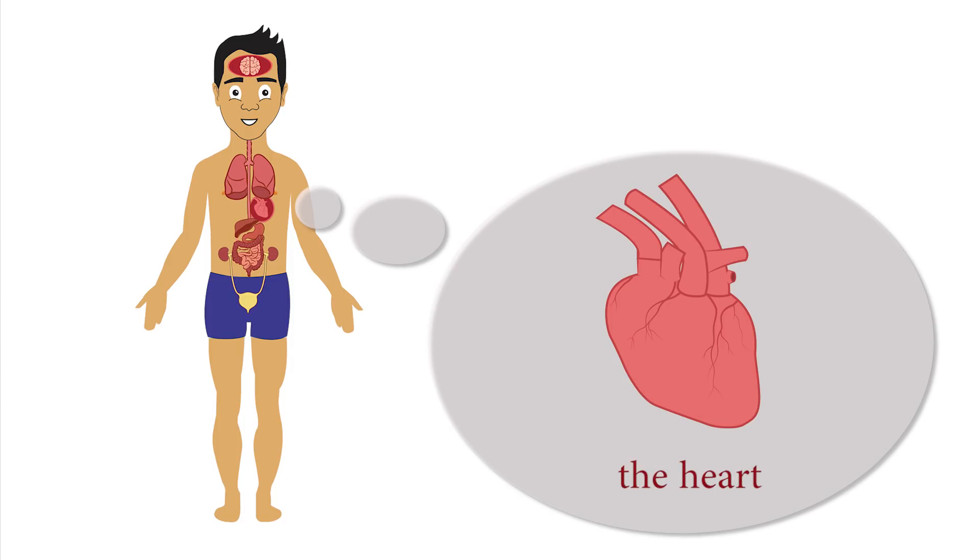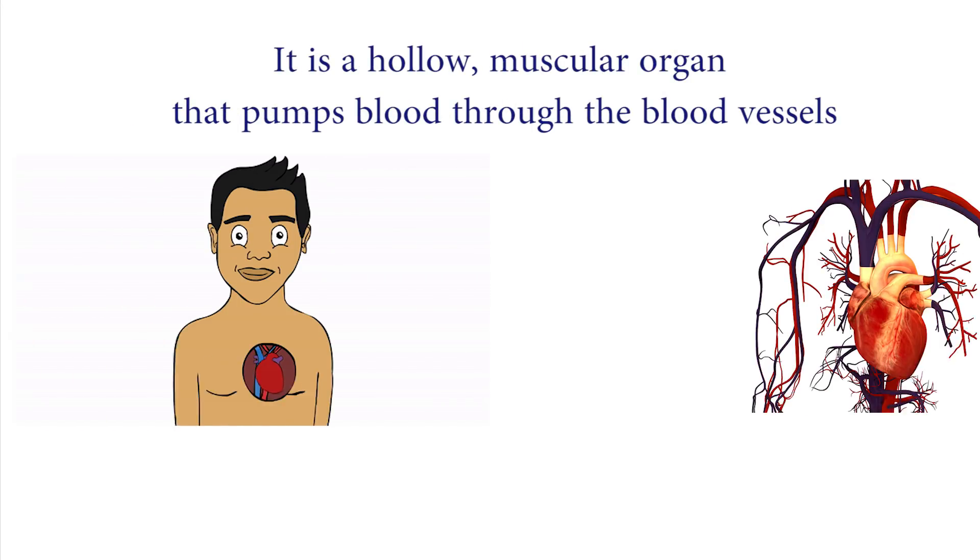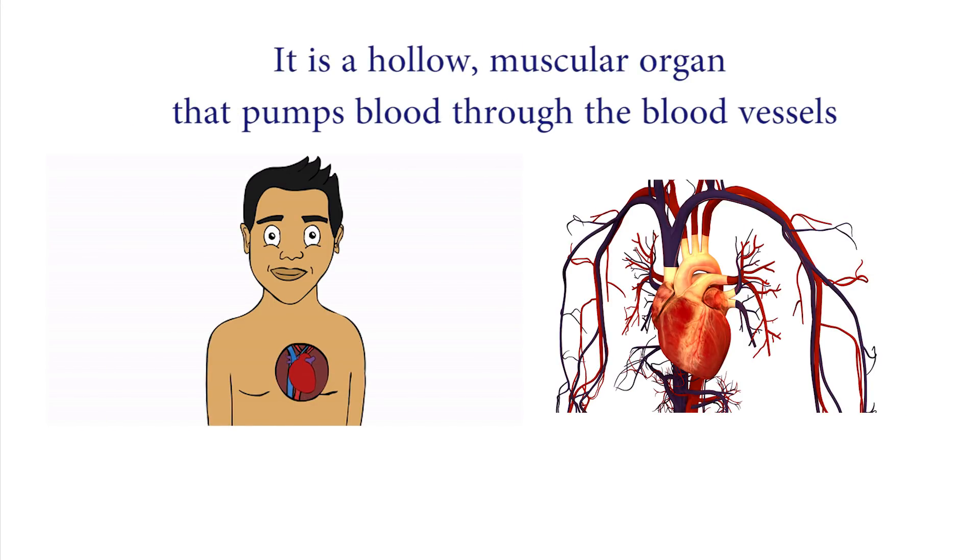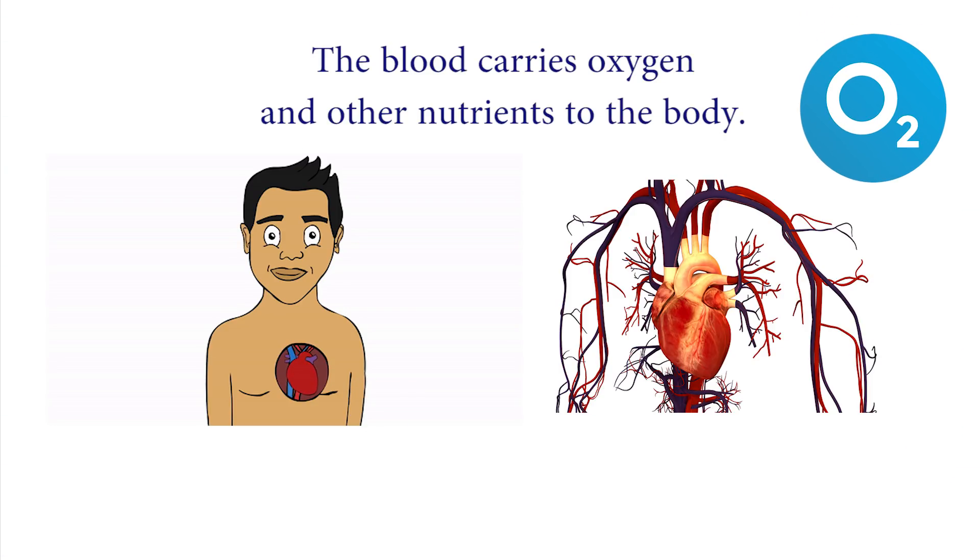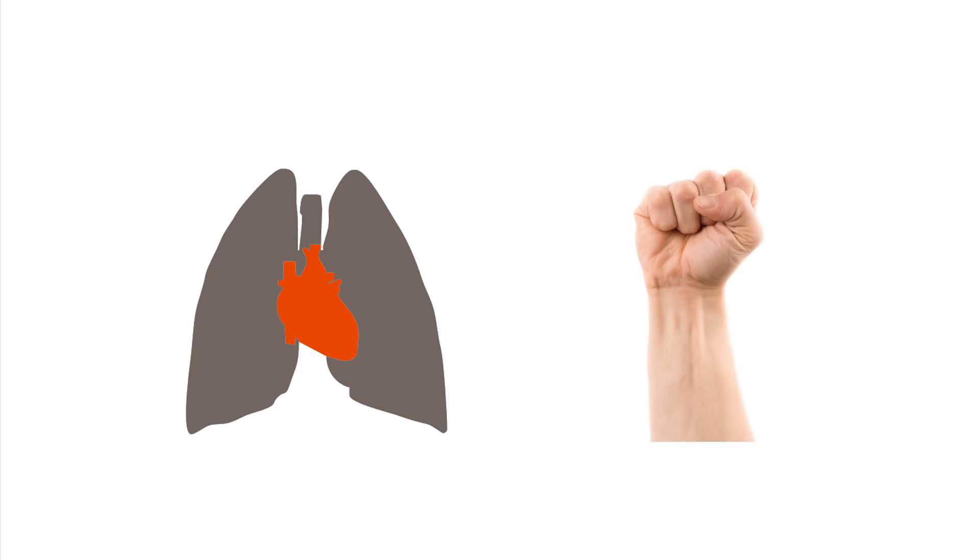The heart is the most important organ in our body. It is a hollow muscular organ that pumps blood through the blood vessels by repeated rhythmic contractions. The blood carries oxygen and other nutrients to the body. It is located between the lungs and is as big as a fist. The heart is always working 24 hours a day.